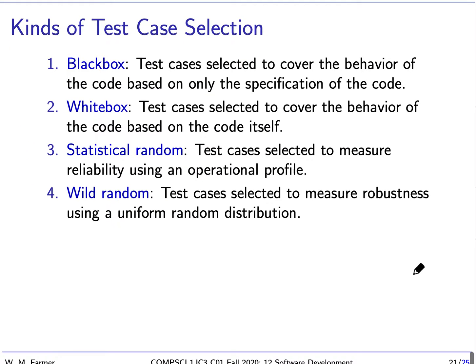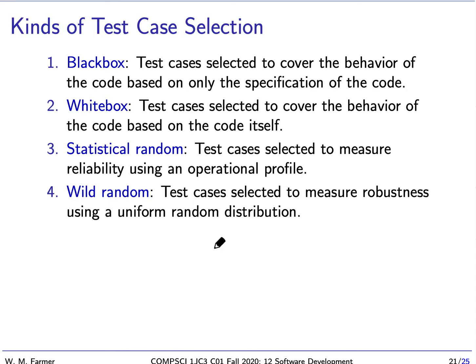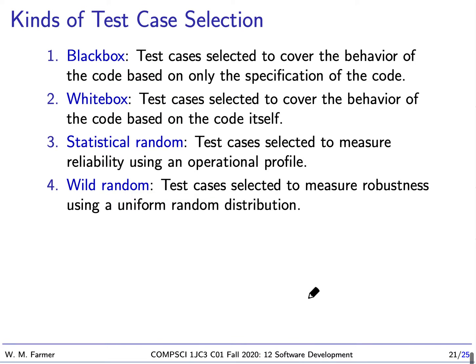There are many kinds of test selection. We're going to focus on three of the most well-known. One is black box testing — we test our software product by looking at its requirement specification, but not by looking at the actual code. This is why it's called black box: we can't see the code, but we can see what the code is supposed to do. Test selections are based on the requirements. White box testing is where we can actually look at the code, and if something looks suspicious, we develop test cases to see if our suspicions are warranted.